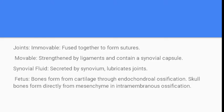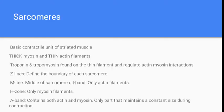For the fetus, bones form from cartilage through endochondral ossification. Skull bones form directly from mesenchyme through intramembranous ossification. The main point of skeletal muscle is how it contracts. Sarcomeres are the contractile unit of striated muscle. Myosin is thick, and there are thin actin filaments. Troponin and tropomyosin are found on the thin filament and they regulate the actin-myosin interactions.